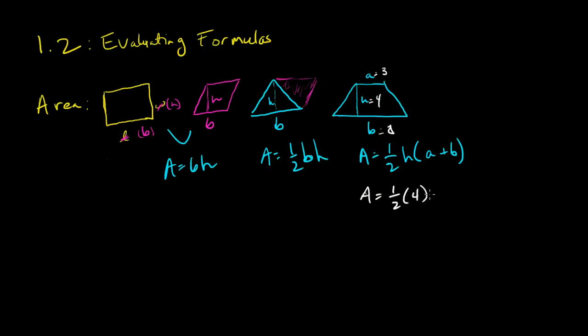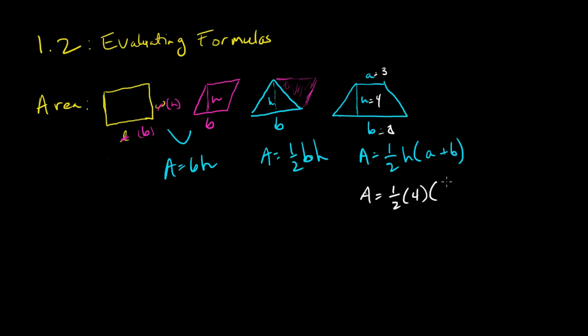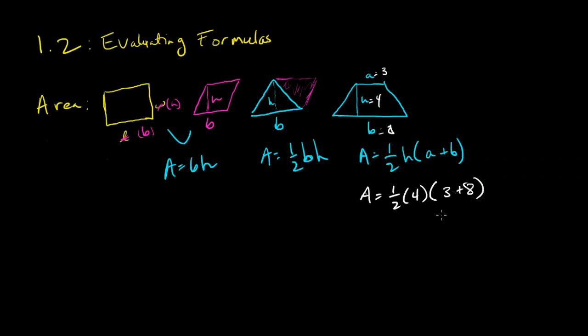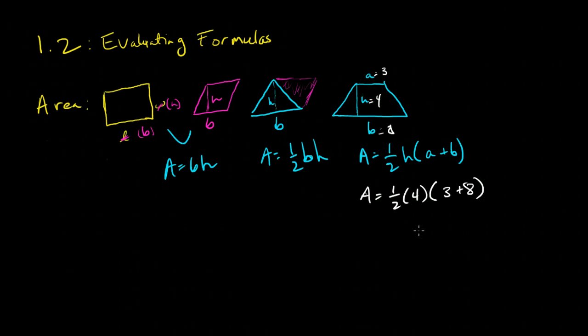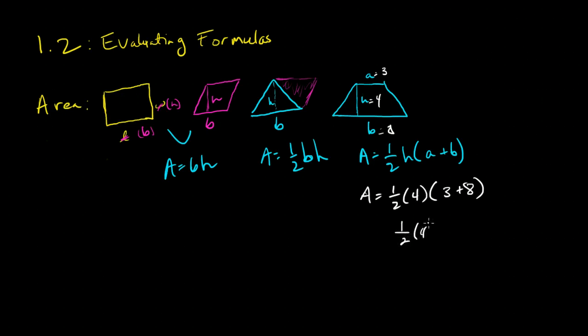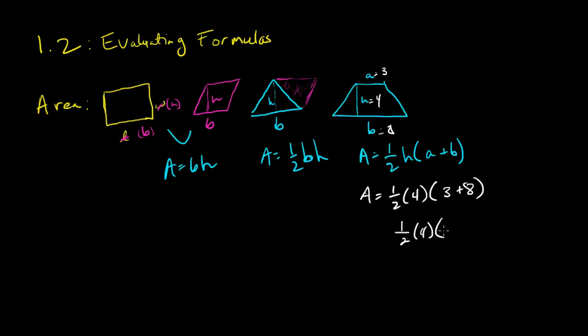And so I would use now my order of operations in order to solve this, in order to evaluate this. So 4 times 11 would be 2 times 11, which would be 22.